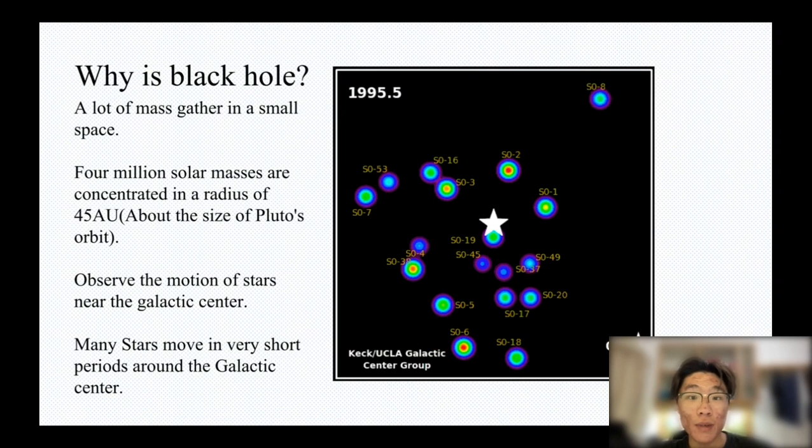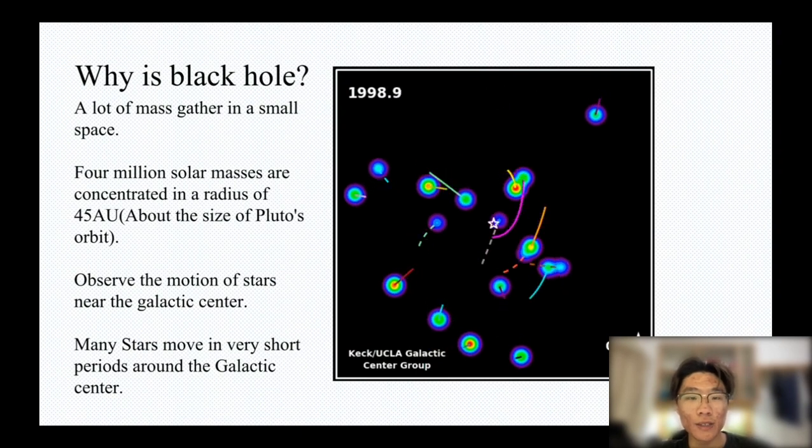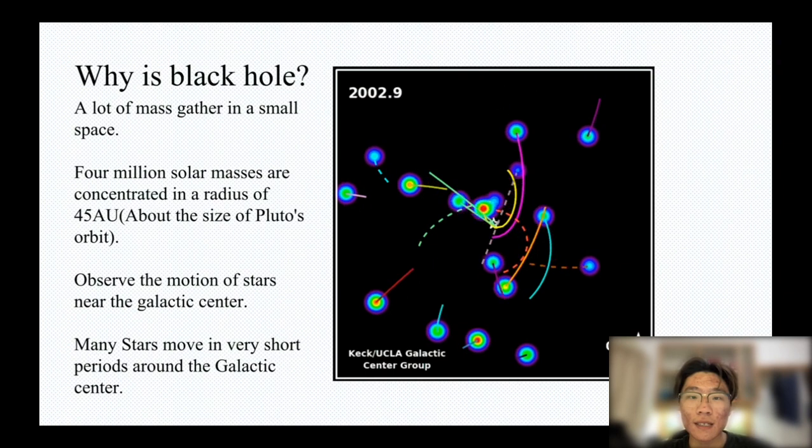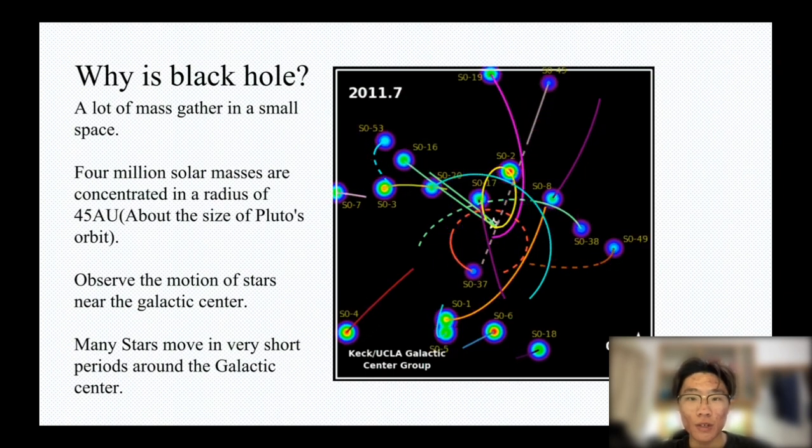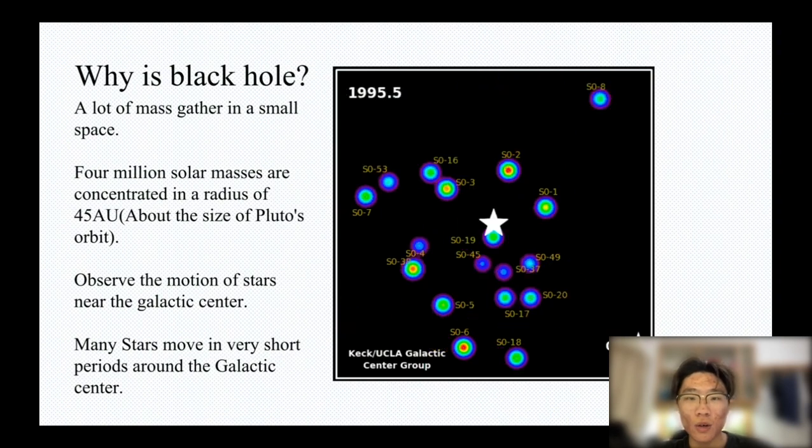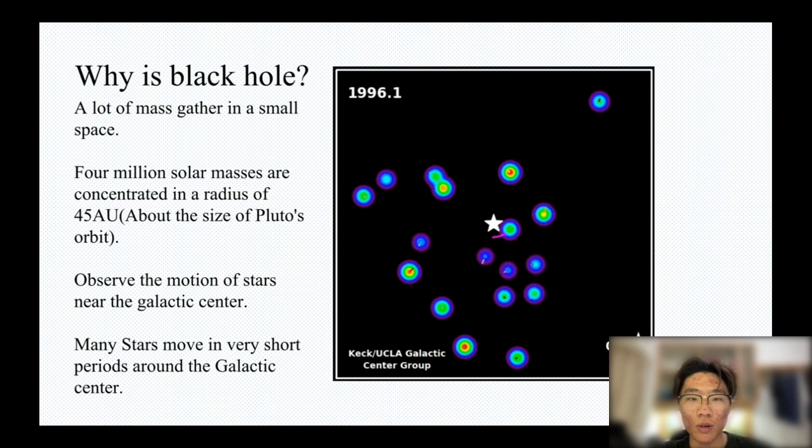It means 4 million suns gathered in our solar system. Due to existing technical limitations, the actual range may be even smaller. For such a massive, dense object, only black holes currently qualify.